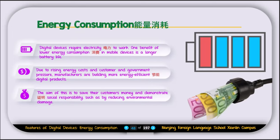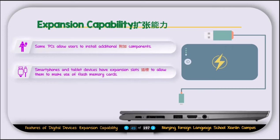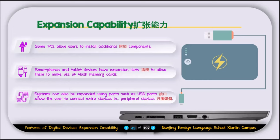The next feature is expansion capabilities. Some devices allow users to install additional components. For example, smartphones and tablet devices have expansion slots to allow use of flash memory cards — on Android phones, you can insert an SD card to extend storage. Systems can also be expanded using ports such as USB, which allows users to connect extra peripheral devices. For example, a laptop may have a built-in SD card reader, or you can use USB ports to connect devices like a microphone, keyboard, or wireless mouse.